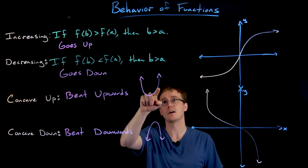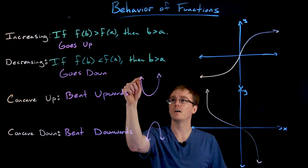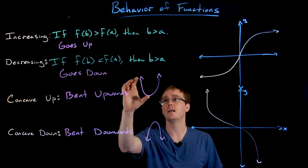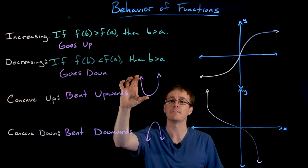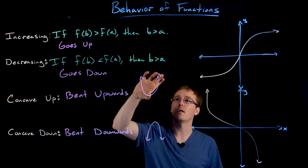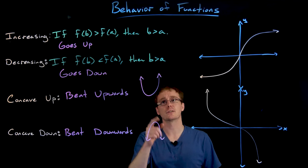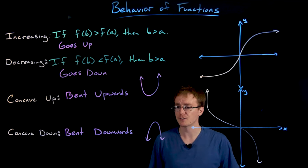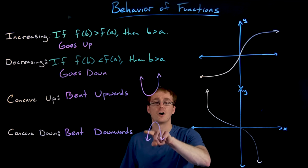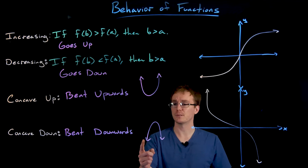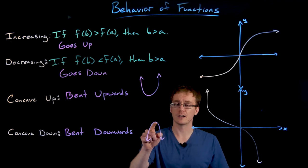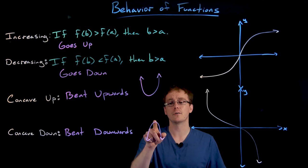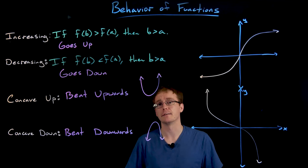For the entire upward-pointing parabola we are concave up, but on the first half we are decreasing and on the second half we are increasing. So a decreasing concave up graph looks like the left side of that parabola, while an increasing concave up graph looks like the right side. For the downward parabola we are concave down throughout — on the first piece we are increasing and on the second piece we are decreasing, giving us all four combinations.